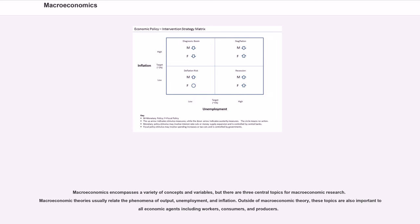Macroeconomics encompasses a variety of concepts and variables, but there are three central topics for macroeconomic research. Macroeconomic theories usually relate the phenomena of output, unemployment, and inflation. Outside of macroeconomic theory, these topics are also important to all economic agents including workers, consumers, and producers.